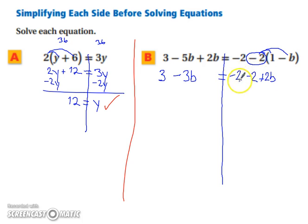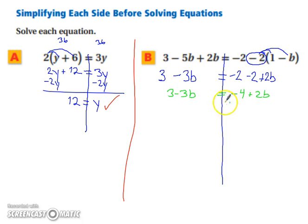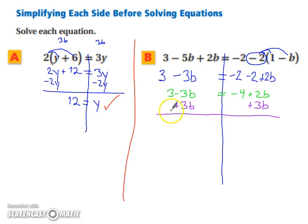There are still like terms on the right-hand side. We rewrite the left-hand side as 3 minus 3b. On the right, negative 2 minus 2 gives negative 4, and the 2b stays. Now we can start moving our variables. We add 3b to both sides — choosing to move the 3b so that the b values stay positive. So we're left with 3 on the left-hand side, and on the right-hand side we're left with negative 4 plus 5b.